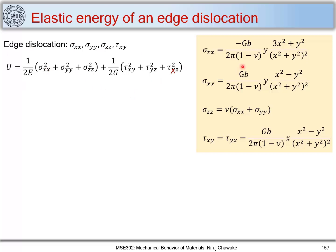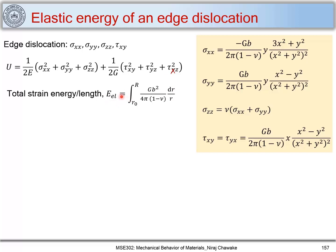Using the same approach — plugging in the edge dislocation stress values — we integrate from r-naught to R: E_l = ∫ Gb²/[4π(1−μ)] · dr/r. This gives the elastic strain energy per unit length for an edge dislocation as: E_l = Gb²/[4π(1−μ)] · ln(R/r-naught).